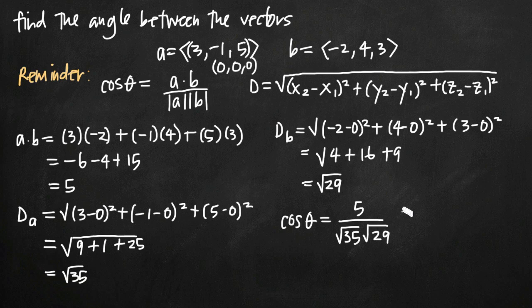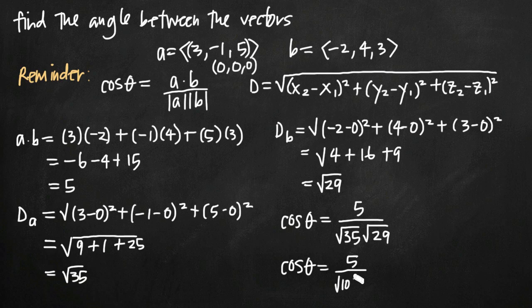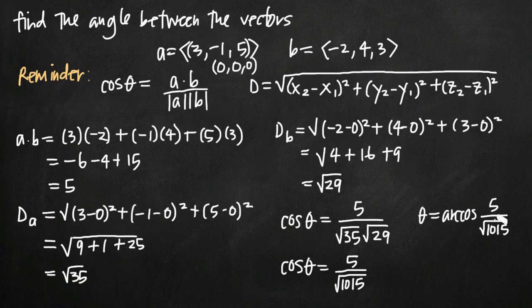Now we solve for theta. Cosine of theta equals 5 divided by square root of 35 times square root of 29. Since both are raised to the same exponent, we can multiply the bases: 35 times 29 is 1015, giving square root of 1015 in the denominator. Taking the inverse cosine of both sides, theta equals arccos of 5 over square root of 1015. Punching this into the calculator, theta is approximately 81 degrees — the angle between vectors a and b.